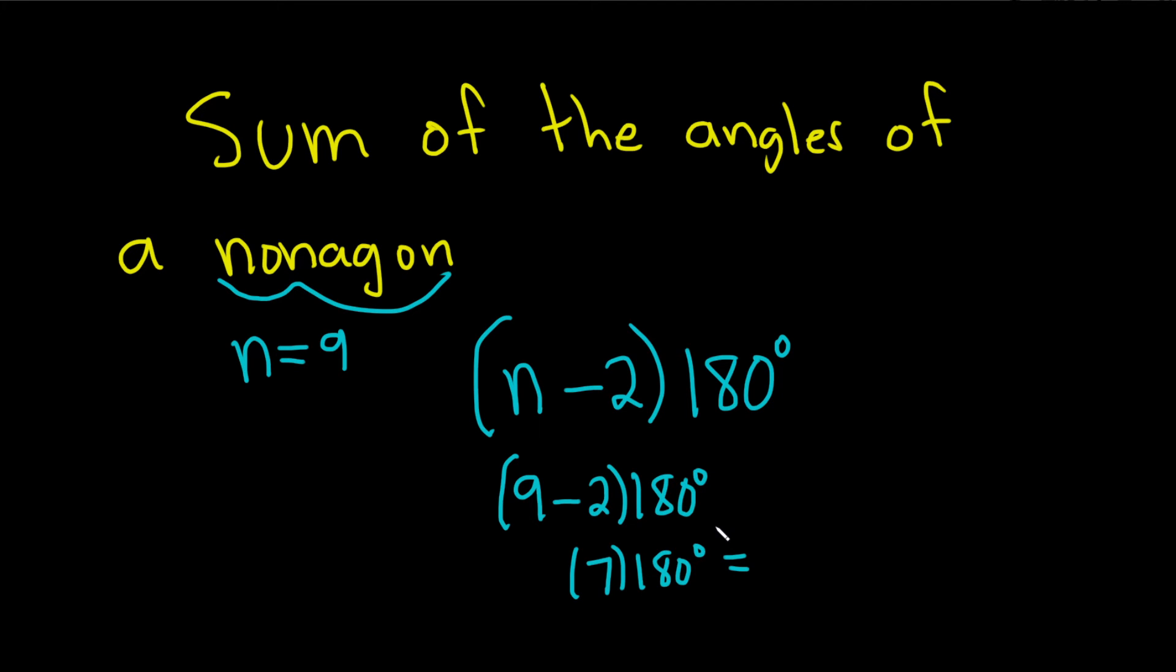And I'm going to put this in my calculator just to be really sure everything's okay. Yep, 1260 degrees. What a big number. So that is the sum of the angles of a nonagon.